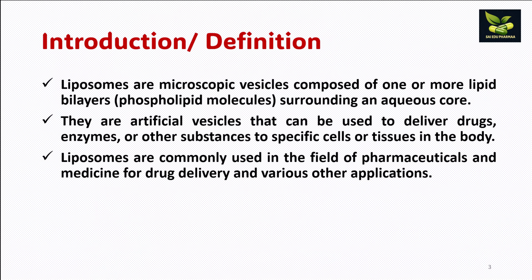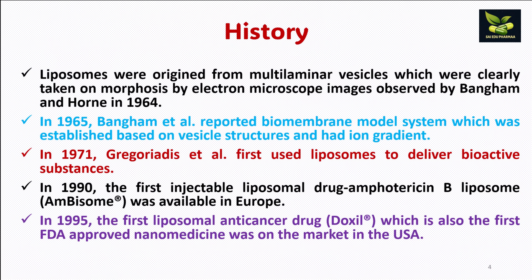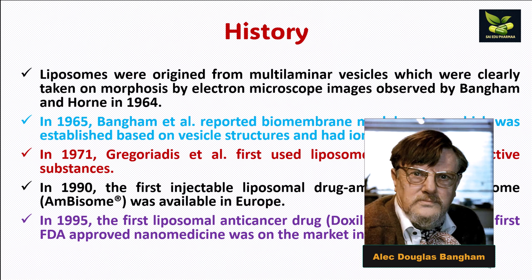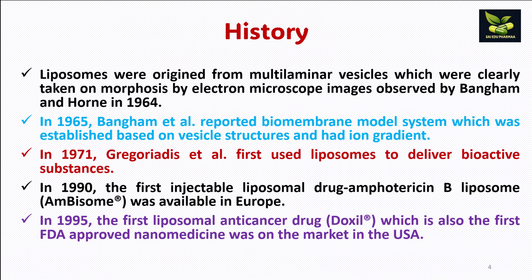Looking at the history of liposomes, they were originated from multilamellar vesicles which were clearly observed by electron microscope images by Bangham and Horn in 1964. In 1965, Bangham et al. reported a biomembrane model system established based on vesicle structures with an ion gradient. Then Gregoriadis et al. in 1971 firstly used liposomes to deliver bioactive substances.